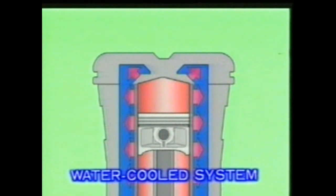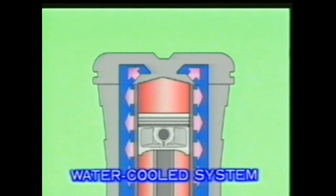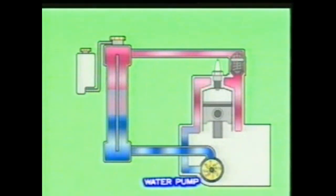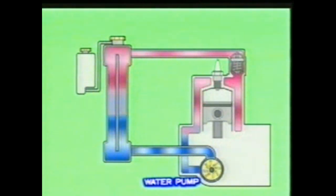A water-cooling system passes liquid coolant through passages around the cylinder and combustion chamber. The heat caused during combustion is transferred to the coolant and the engine is cooled. This diagram shows how the conventional water cooling system works. As the engine turns, the water pump pumps the coolant through the water jacket or passages around the cylinder and cylinder head.